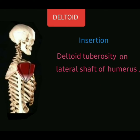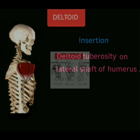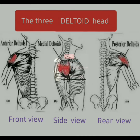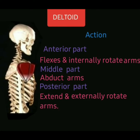The deltoid muscle is inserted at the deltoid tuberosity on the lateral shaft of the humerus. This image shows the three heads of the deltoid: anterior deltoid, medial deltoid, and posterior deltoid. The views shown are front view, side view, and rear view.